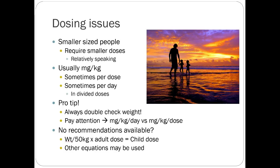For dosing issues, we have monographs with recommendations for renal and hepatic failure in kids — most of this is well documented. Generally, smaller people require smaller doses, though it's relative. Tylenol is dosed at 10–15 mg/kg — if you gave a 100 kg adult 15 mg/kg, that's 1500 mg, more than the adult single-dose max of 1 gram. So relative to body weight, kids may actually receive a bigger dose, which is normalized by their higher metabolism. Most drugs are dosed in mg/kg — sometimes mg/kg/day divided into doses, or mg/kg/dose given multiple times daily — pay close attention to that distinction.